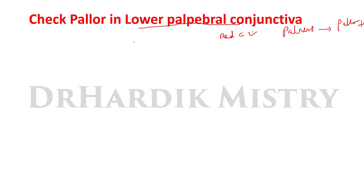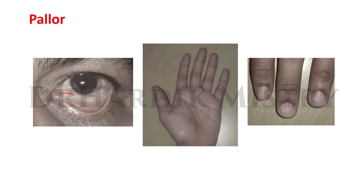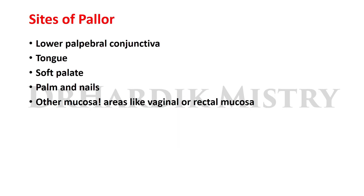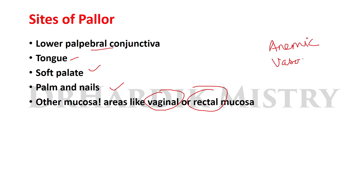In this photograph, you can see pallor in the lower palpebral conjunctiva, on the palm, and over the nail bed — all signs of pallor. To summarize, the causes of pallor are related to anemic conditions, vasoconstriction, or cutaneous diseases and disorders.